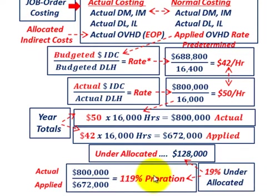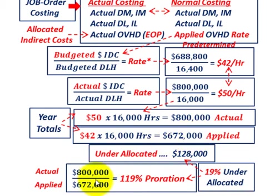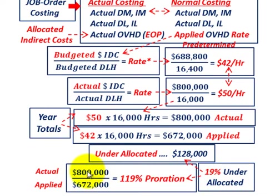This is where the proration comes into play. Looking at it in terms of a percentage: we take our actual amount of $800,000 divided by the applied amount of $672,000 — that gives us 119%. What we're really saying is we're 19% under-allocated, because our actual amount of $800,000 is 19% greater than the applied amount of $672,000.